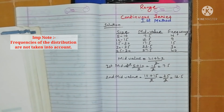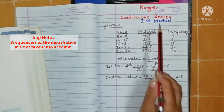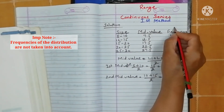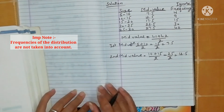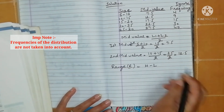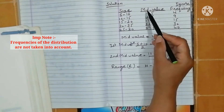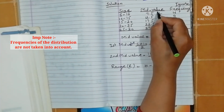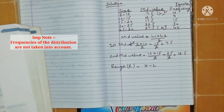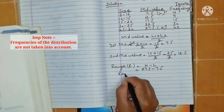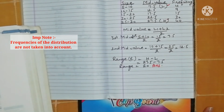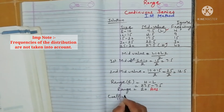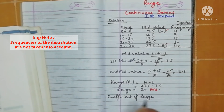To find the range, we identify the highest mid value, which is 27.5, and the lowest mid value, which is 7.5. The formula is Range = H minus L. So range equals 27.5 minus 7.5, which equals 20. That is the range of the series.